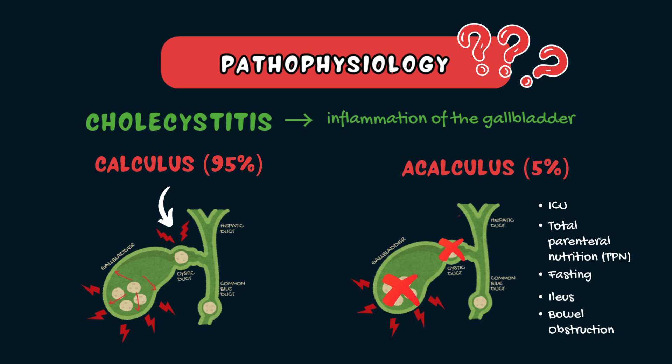Also, critically ill patients may often have hypoperfusion due to shock or trauma. This can affect the cystic artery, which supplies blood to the gallbladder, leading to ischemia, necrosis, and in some cases, perforation of the gallbladder.